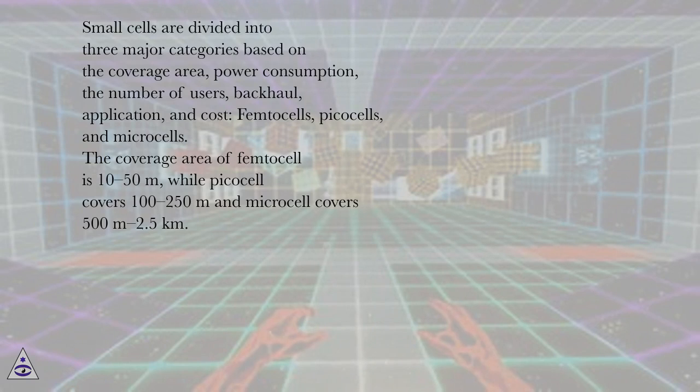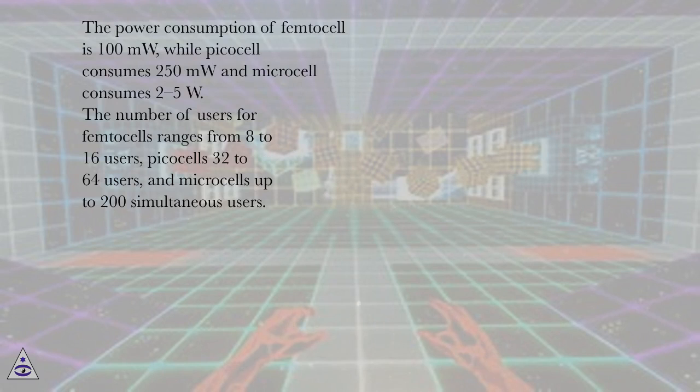The coverage area of femtocell is 10 to 50 meters, while picocell covers 100 to 250 meters and microcell covers 500 meters to 2.5 kilometers. The power consumption of femtocells is 100 milliwatts, while picocell consumes 250 milliwatts and microcells consumes 2 to 5 watts. The number of users for femtocells ranges from 8 to 16 users, picocells 32 to 64 users, and microcells up to 200 simultaneous users.